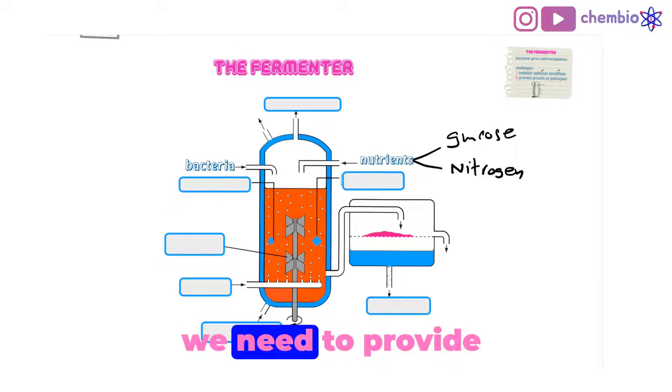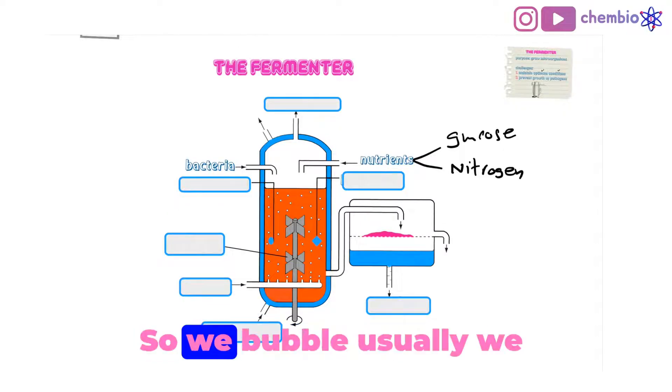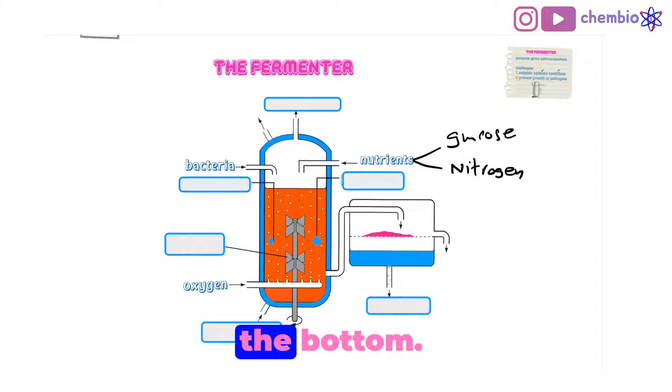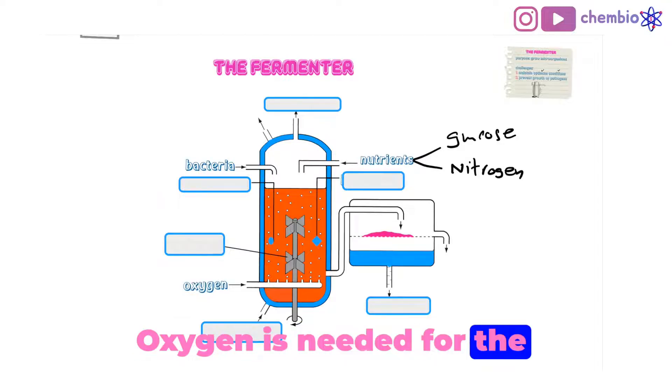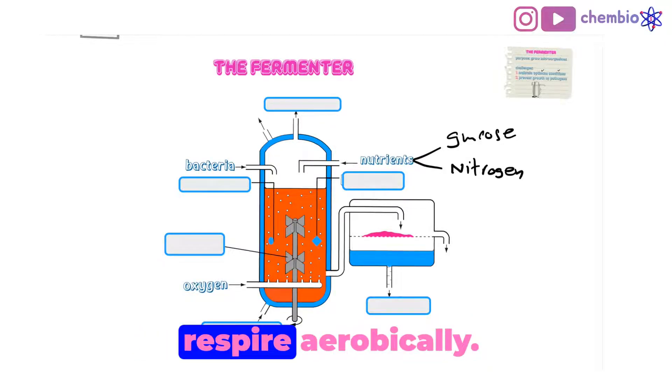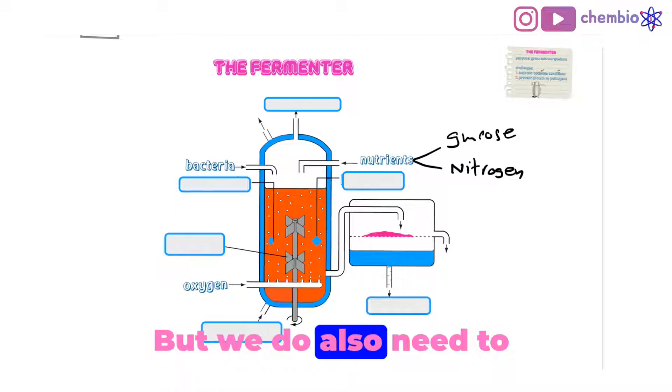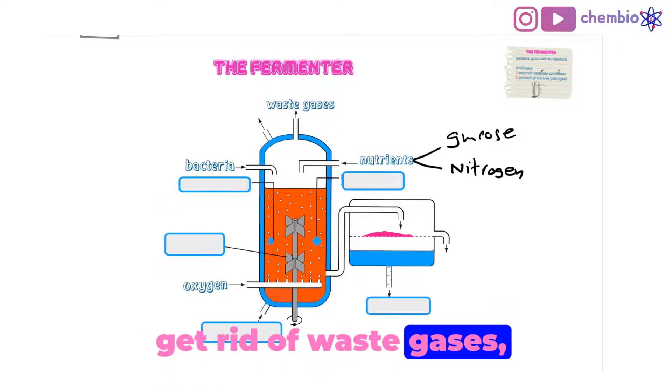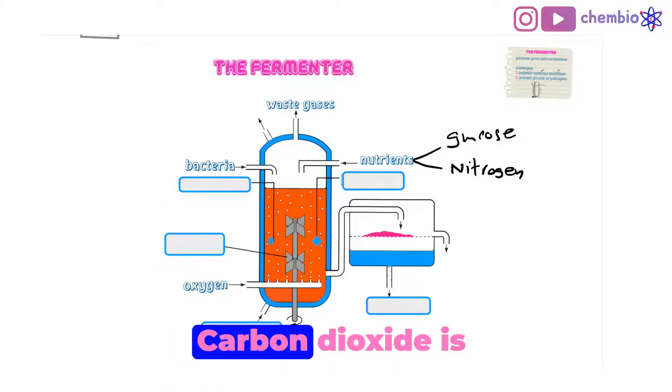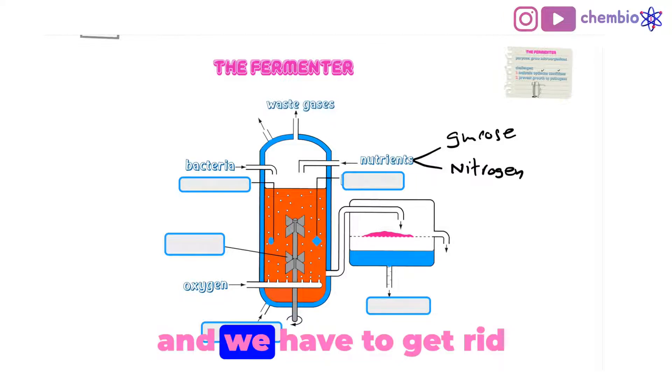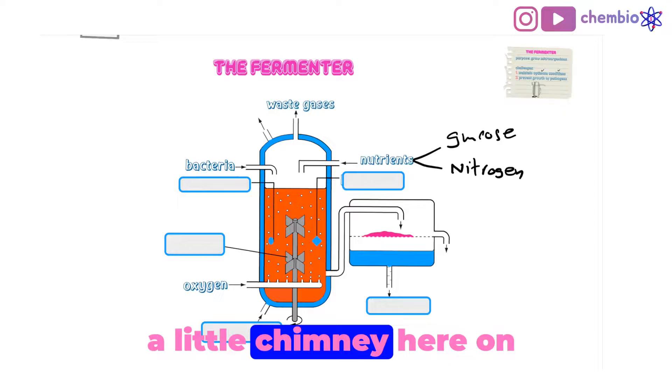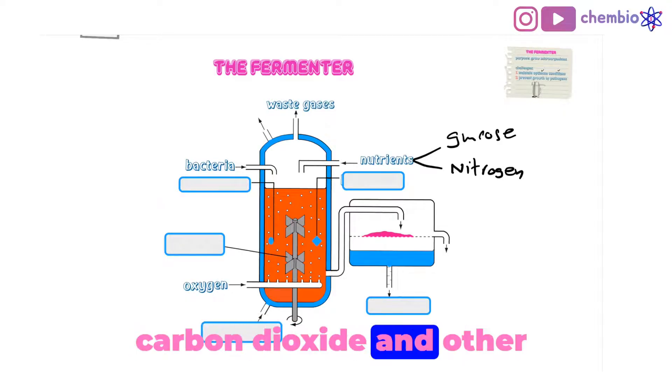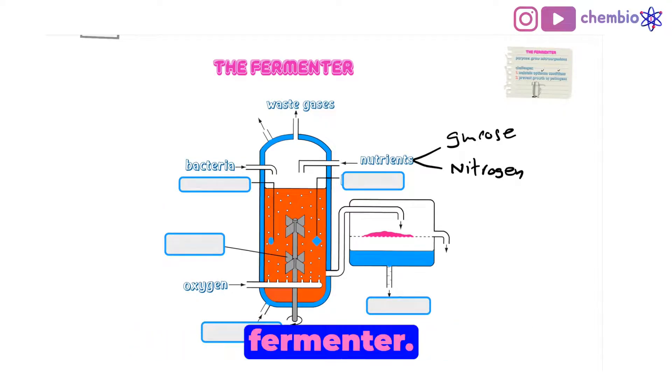Other than this, we need to provide oxygen. We bubble oxygen here at the bottom. Oxygen is needed for the microorganisms to respire aerobically. But we also need to get rid of waste gases such as carbon dioxide. Carbon dioxide is acidic and we have to get rid of excess carbon dioxide. So we have a little chimney here on the top to let the carbon dioxide and other waste gases out of the fermenter. This will help to prevent the building up of pressure inside the fermenter.